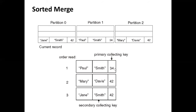This is a sorted dataset, so we sort on age and then pick our data to be written to the target stage. When we sort on age, 34 is the lowest value, so that record comes first. Then we have two records with the same age value of 42. In this case, we have defined a secondary collection key — the last name. For records with the same age, we check the secondary key. Davis and Smith are sorted in ascending order, so the Davis record gets picked first, then Smith. You can define any key combinations depending on your requirements for writing data to the output stage.